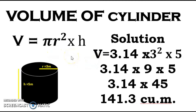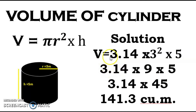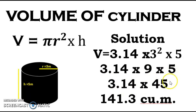Our pi is equivalent to 3.14. So the solution: V equals 3.14 times 3 meters squared times 5. That is 3.14 times 9 (since 3 squared is 9) times 5, which is 45. Then 3.14 times 45 equals 141.3 cubic meters.